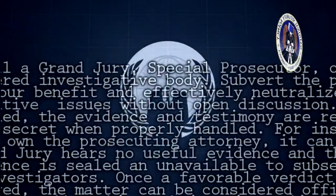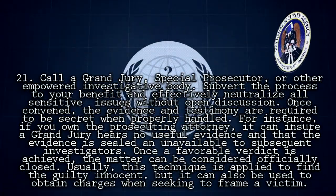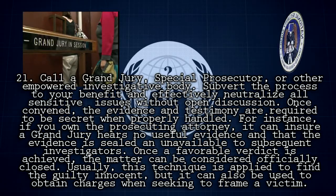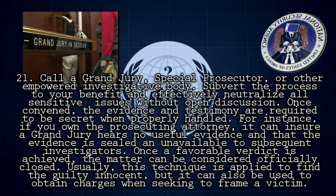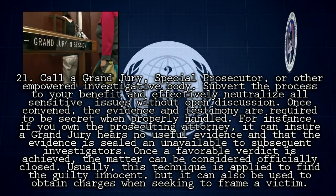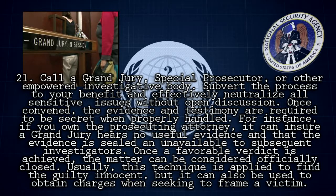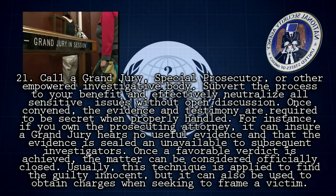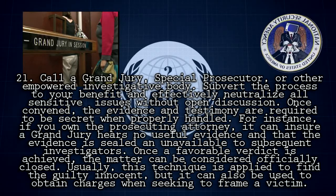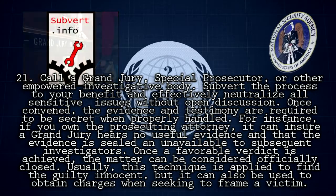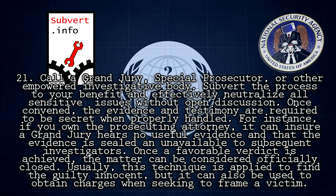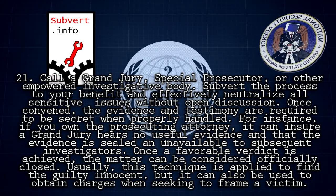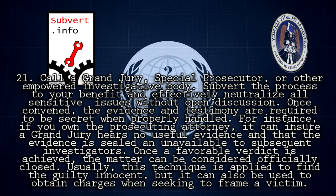Rule 21: Call a grand jury, special prosecutor, or other empowered investigative body. Subvert the process to your benefit and effectively neutralize all sensitive issues without open discussion. Once convened, the evidence and testimony are required to be secret when properly handled. For instance, if you own the prosecuting attorney, it can ensure a grand jury hears no useful evidence and that the evidence is sealed and unavailable to subsequent investigators.